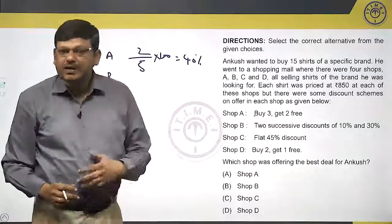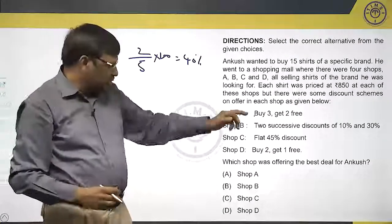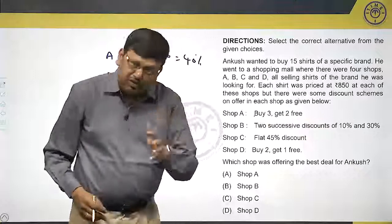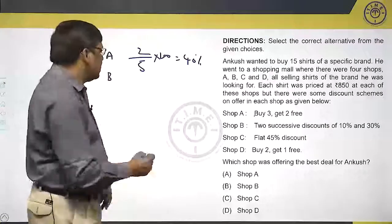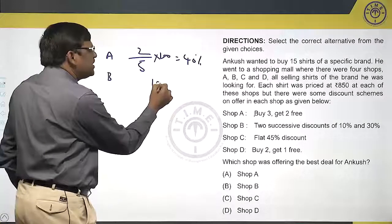The discount he is getting is 2 out of 5. 2 out of 5 means it is how much percentage? 40% discount he is getting from Shop A.